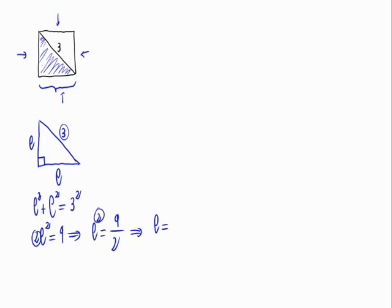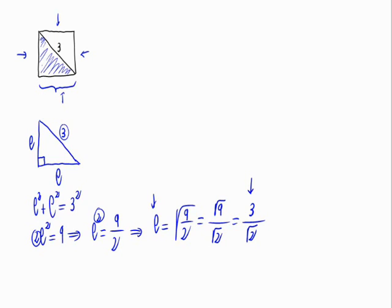So, the side would be equal to the square root of 9 divided by 2. This would be the same as the root of the numerator divided by the root of the denominator. As the root of 9 is 3, we write 3 divided by the square root of 2.